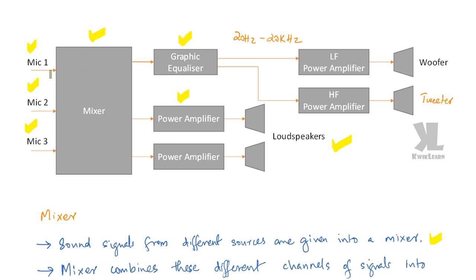The mixer mixes signals from different input microphones — microphone 1, 2, and 3. It combines the input from separate microphones into one or more outputs. Each of the outputs is amplified using a power amplifier and then given to the loudspeaker.